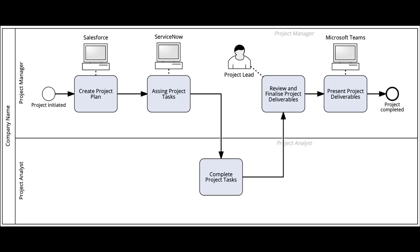In this video, we will be exploring one of the key elements for a good process model: the IT system element. The IT system element is a Signavio-specific extension of BPMN. They are mainly used to identify IT systems that support manual work.